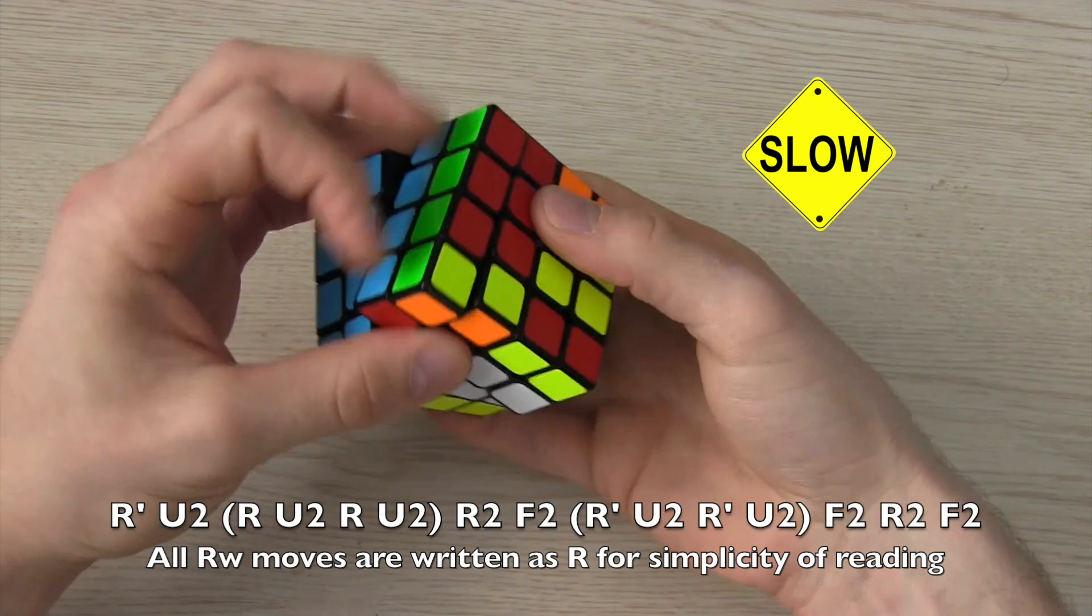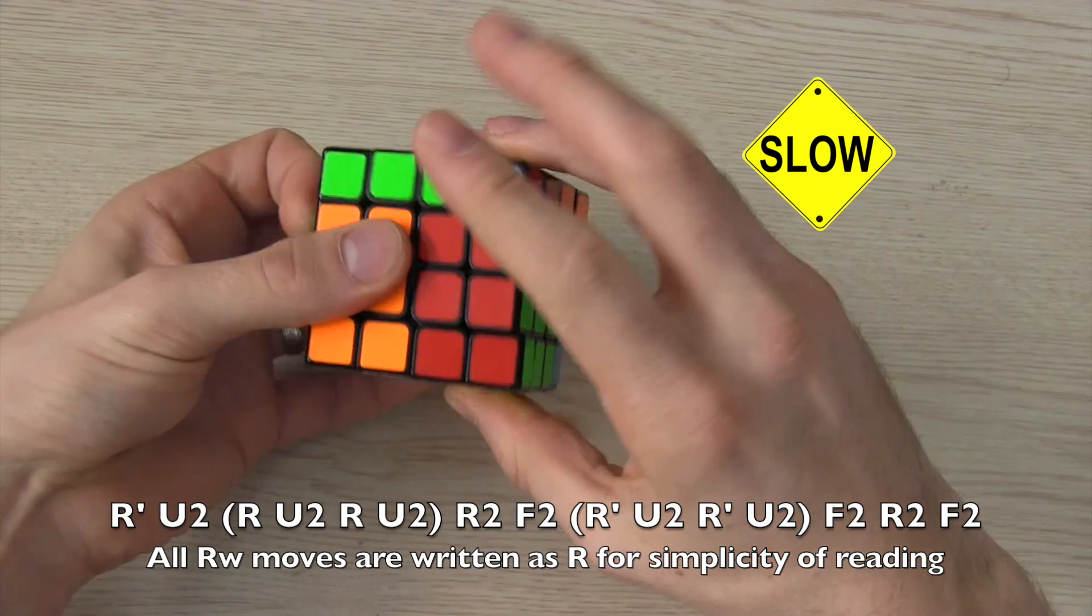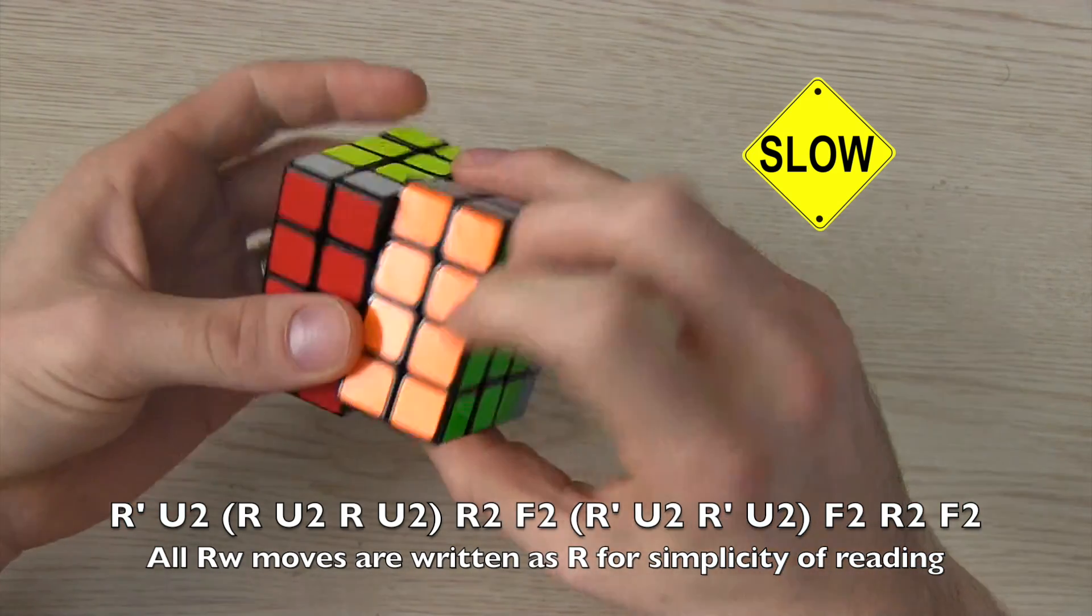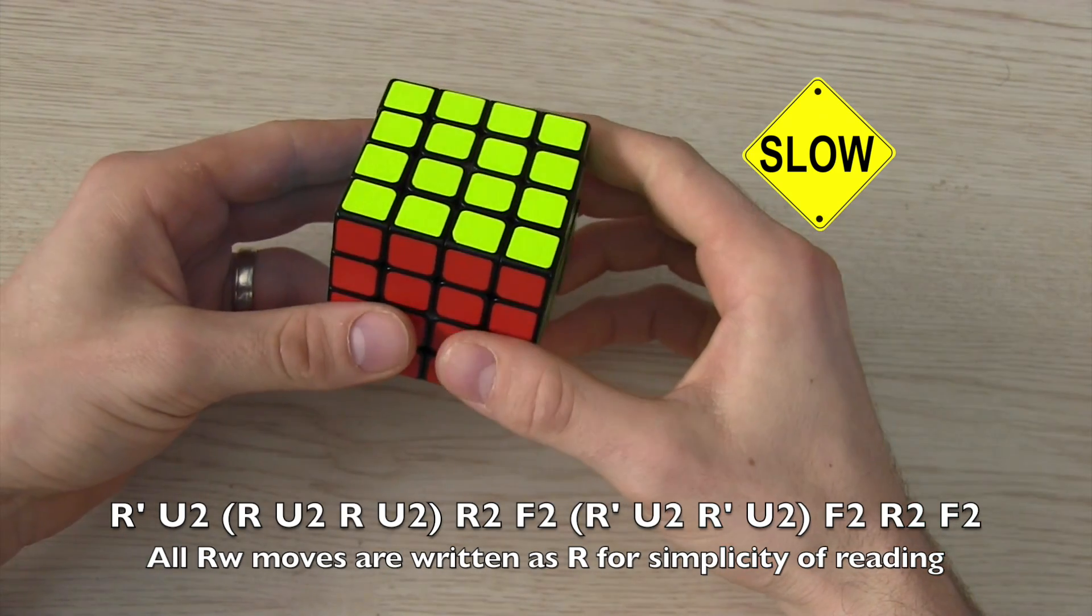So this algorithm, and most other ones that speed solvers use, turns two layers at the same time. And that's also the other reason why I don't usually use this for my beginner videos, because turning two layers at the same time when I started out was really confusing.